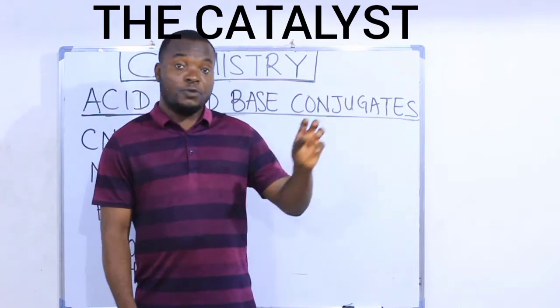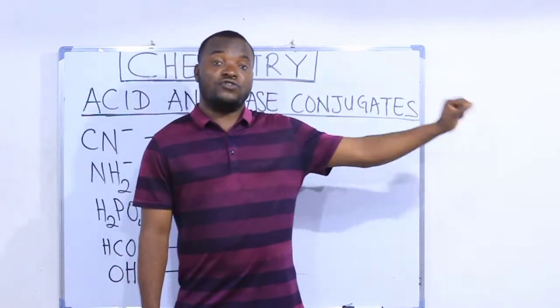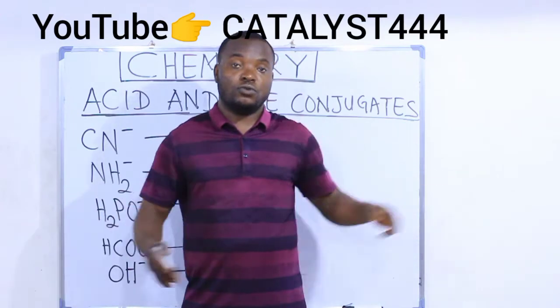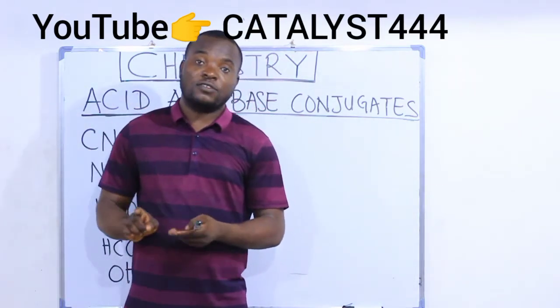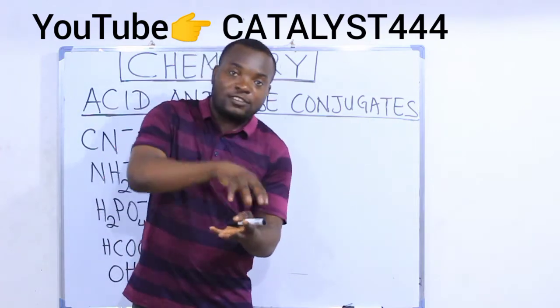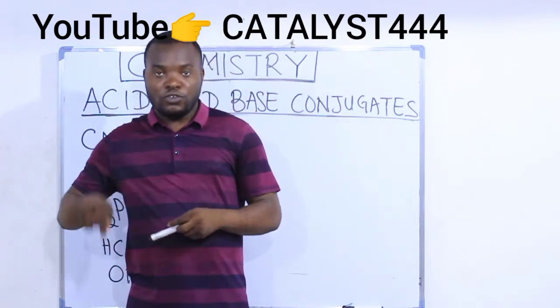To find a conjugate base, all you need to do is remove one hydrogen ion from the substance given to you. But to find the conjugate acid of a substance, all you need to do is add a hydrogen ion to the substance given to you.